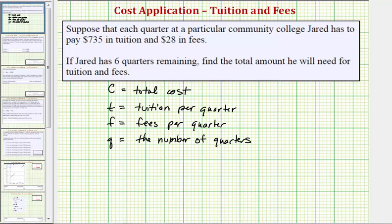So for any student, the total cost C would be equal to the tuition per quarter plus the fees per quarter, or T plus F, times the number of quarters, or in this case times Q.